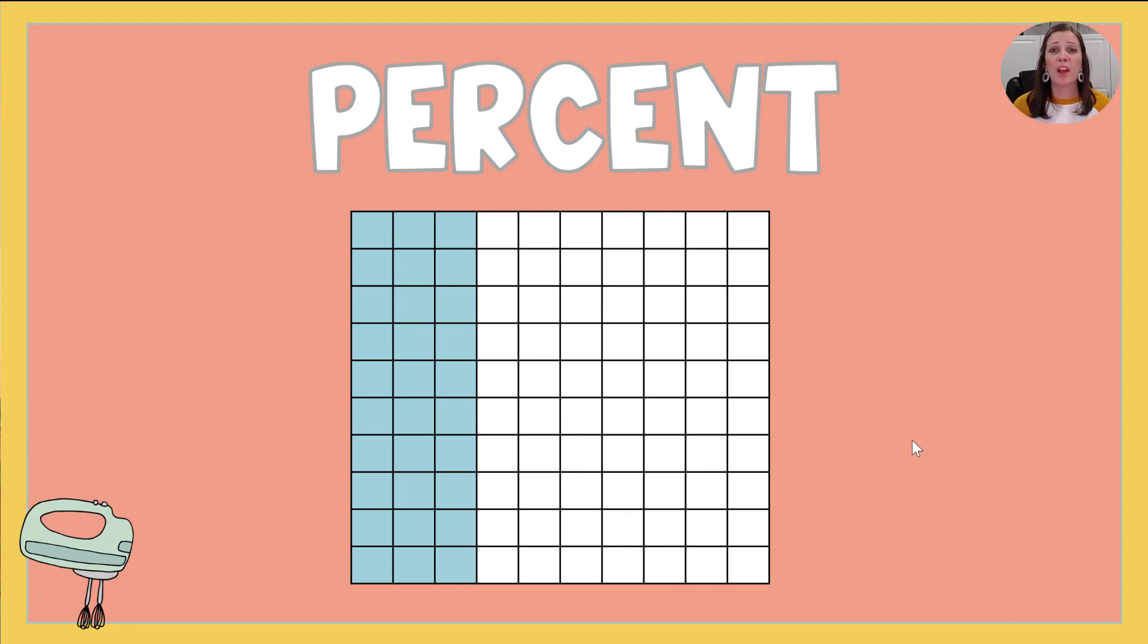We've got a grid here. It's a 100 grid. It's a 10 by 10 and I want to know what percentage of this grid is colored in. Well these are rows of 10 because it's a 10 by 10 like we said and I've got one, two, three of those. So 30 out of 100 are colored in. We call that 30 percent because again percent means out of 100.